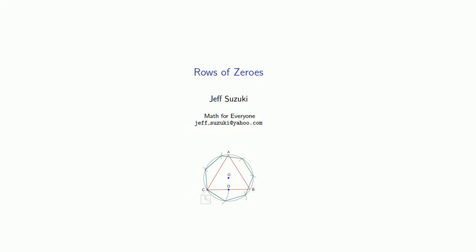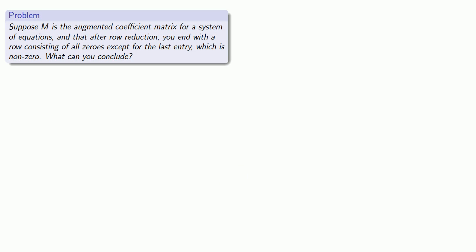Let's examine one important situation that may arise from our process of row reduction. Suppose I have an augmented coefficient matrix for a system of equations, and after row reduction we end up with a row consisting of all zeros except for the last entry, which is non-zero.